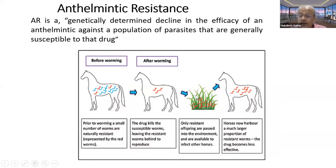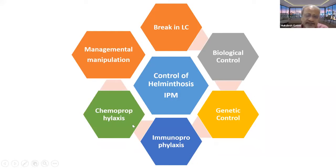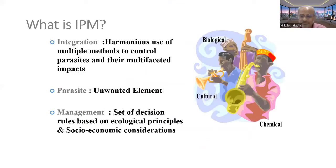That is the significance of refugia. The time has come that we should not only concentrate on anthelmintic therapy — we should use all other means to control these worms and improve the economic status of animal husbandry. Prevention by breaking the life cycle, biological control, genetic control, chemoprophylaxis, and management should all be integrated. Integrated parasite management is like an orchestra where a number of people play different instruments but produce a melody — a harmonious use of multiple methods to control parasites and their multifaceted impacts.